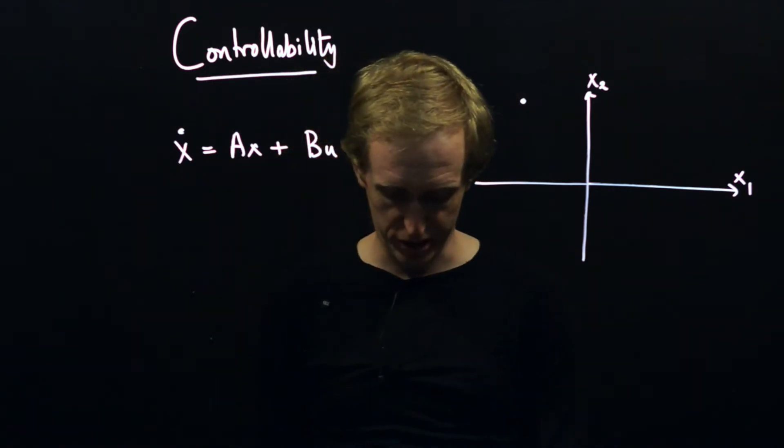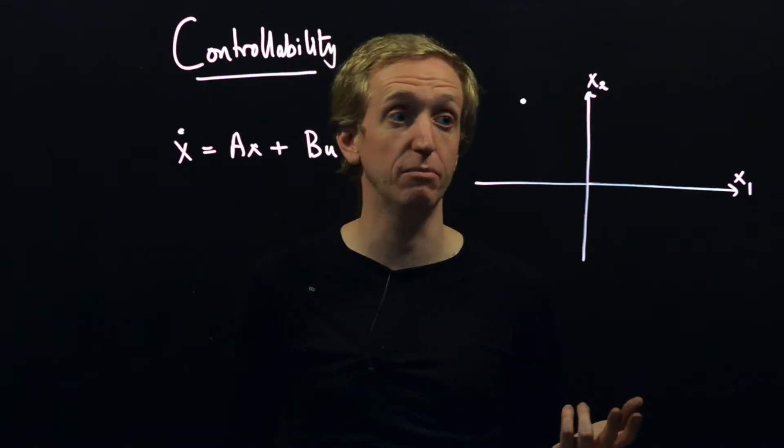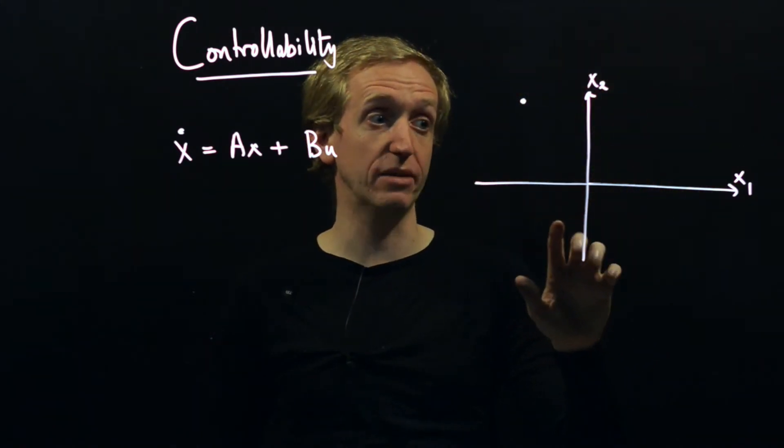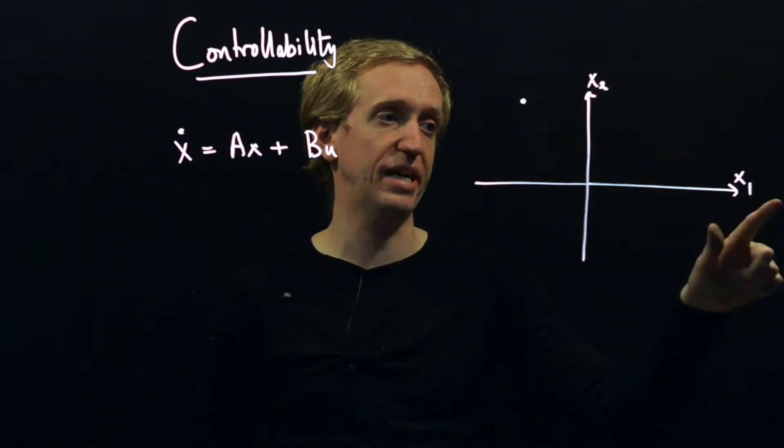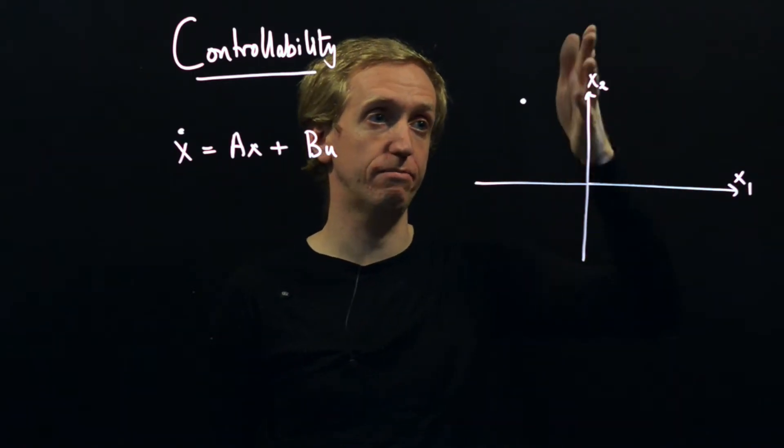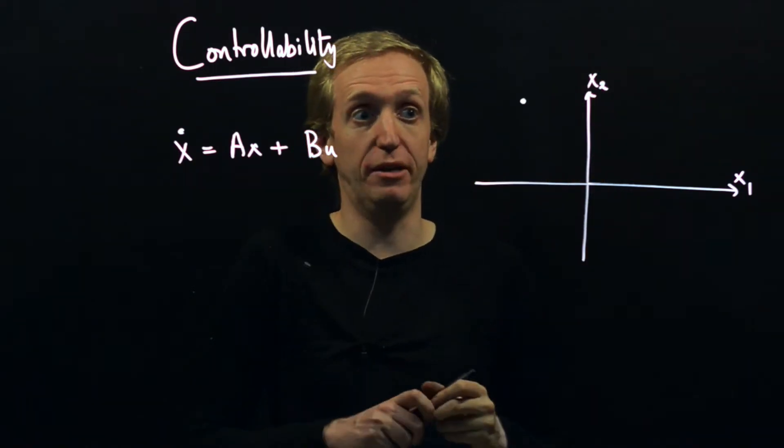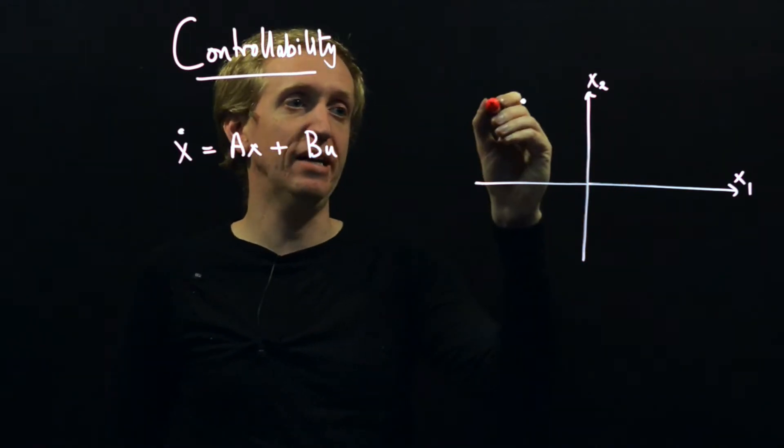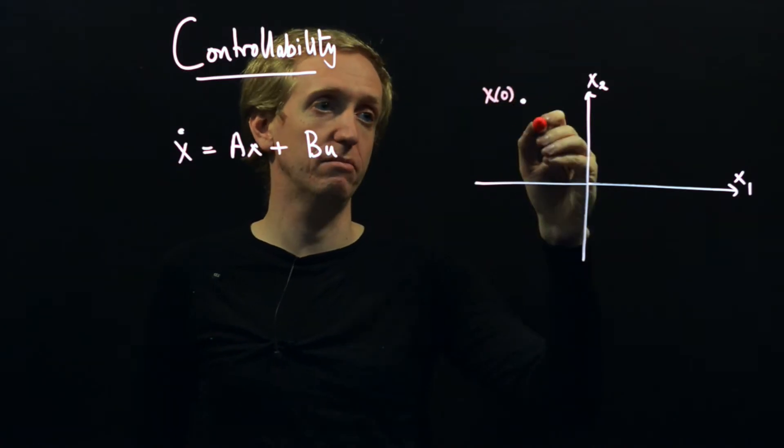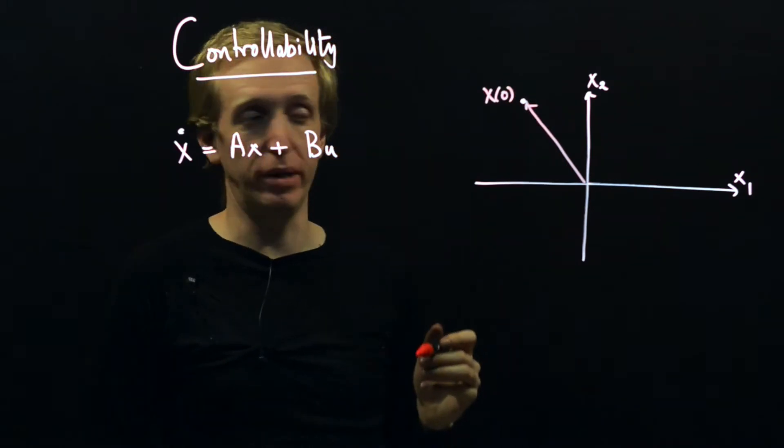Maybe it helps if we just start to draw this out on a picture. Let's assume our system has two states for simplicity, so that we can visualize the state of our system on a pair of axes. The first axis corresponds to the value of our first state and the second our second state. Let's just say at time t equals zero the value of our state is at this point here in the state space.